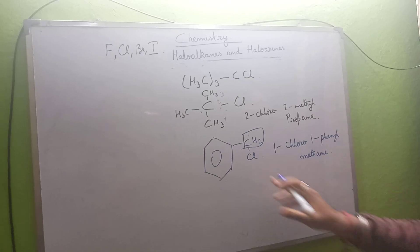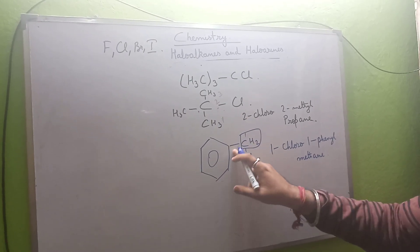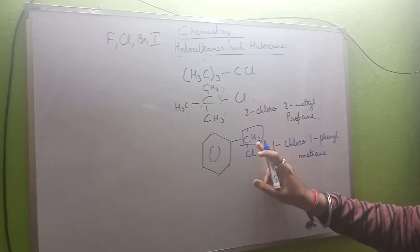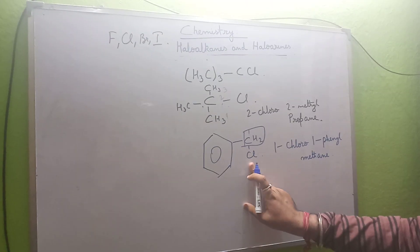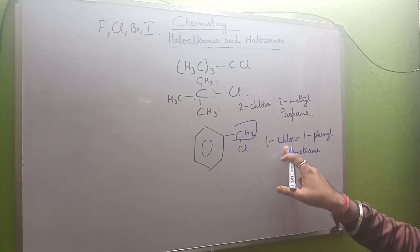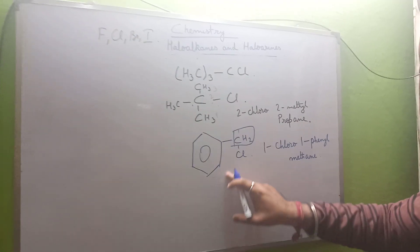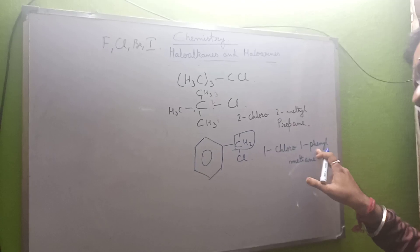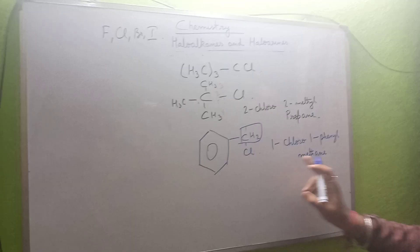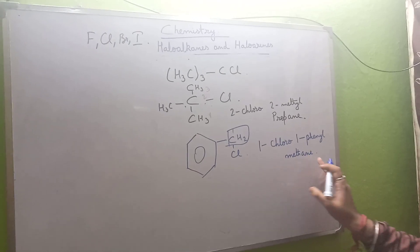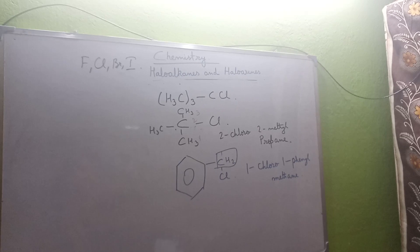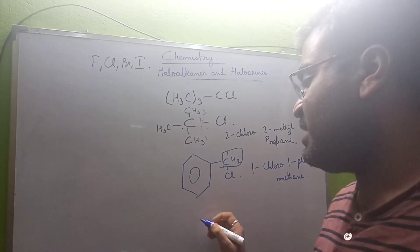Since only one carbon is present, we call it methane. So the name is 1-chloro-1-phenylmethane — whenever an alkyl group is attached to a benzene ring and that alkyl group also has a halogen, the functional group gets first preference, followed by phenyl, then the number of carbons in the alkyl group.